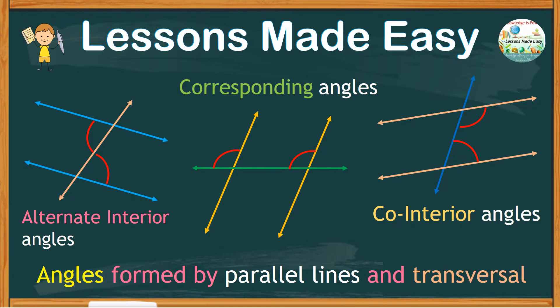A transversal is that line that crosses a pair of parallel lines forming eight angles. If you missed part one of this video, I suggest you go check that out first before watching this one. The link is in the description box below.